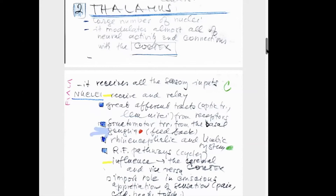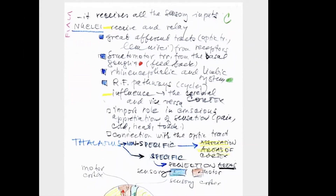The rhinencephalic and limbic ascending tracts also pass to the thalamic nuclei. The reticular formation influences the cerebral cortex via the thalamus, and vice versa — there are bidirectional interconnections. The nuclei play an important role in conscious appreciation of sensation — that means pain, extreme cold, heat, touch, and so on. All these pathways pass through the nuclei of the thalamus.